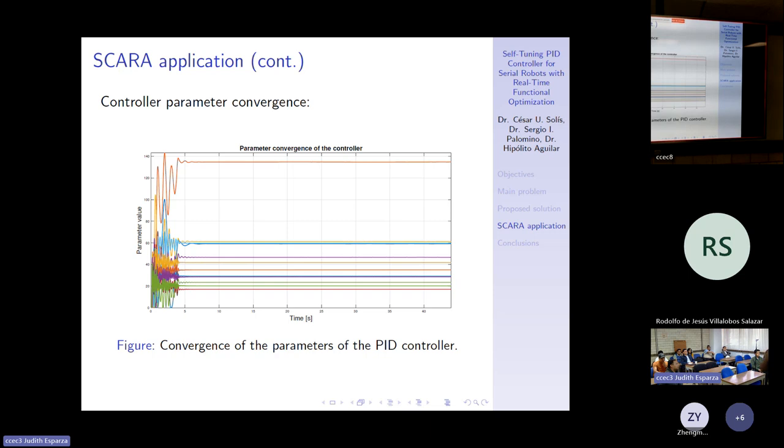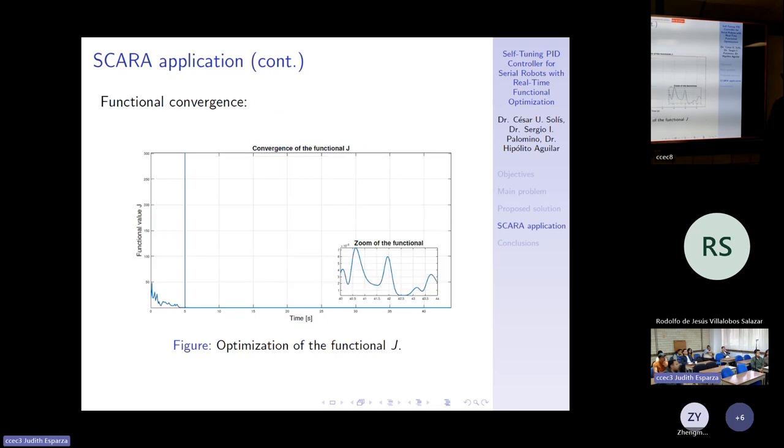Now, the parameter of the controller, the adaptive controller. Here is the convergence to established gains.